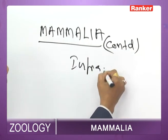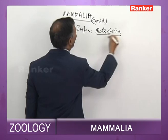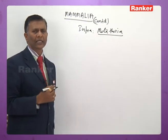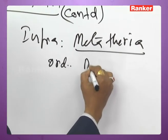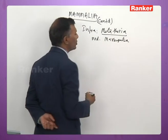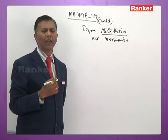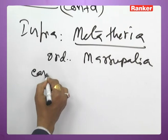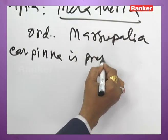Infraclass Metatheria — it includes a single order: Order Marsupialia. Most marsupials are found in Australia, which is why Australia is called the land of marsupials. Unlike Prototheria, ear pinna is present in Metatheria.